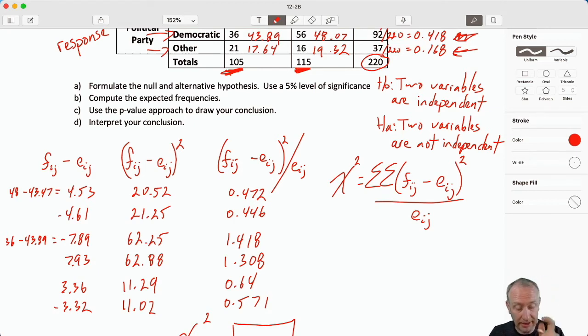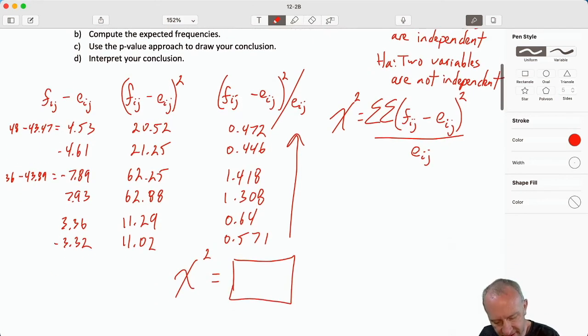Now I'm going to add that column here. I'm just going to add up. Plus 0.64 plus 1.308 plus 1.418 plus 0.446 plus 0.472. And there I have my test statistic, 4.85. Okay, we got that finally done. So we have our test statistic. Now the rest of this problem is the same as every other problem.